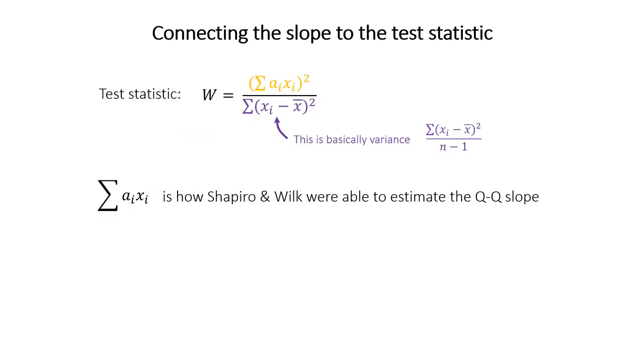So let's get back to the equation here, and especially this numerator part, which is the sum of these a values multiplied by each data point and then squaring the whole thing. So basically, this numerator part, the sum of these a values times the data, is how Shapiro and Wilk estimated the slope of the QQ plot. And remember, the slope is the standard deviation.